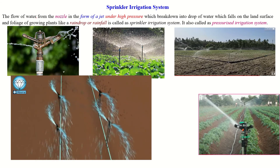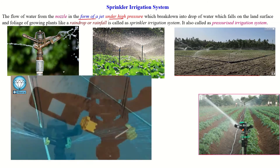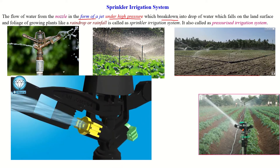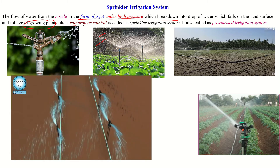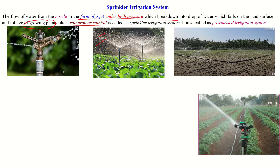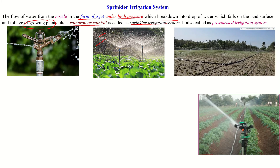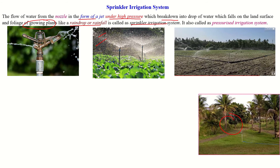The sprinkler irrigation system is defined as the flow of water from a nozzle in the form of a jet under high pressure, which breaks the water into small droplets as shown in this picture, and which falls on your growing plants like rain or raindrops. This type of application of water to the plant is called the sprinkler irrigation system. Water is coming from the nozzle under high pressure and falling on the crop, and maximum pressure is required to bring the water from this nozzle.